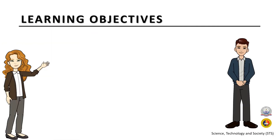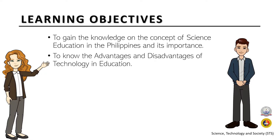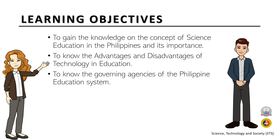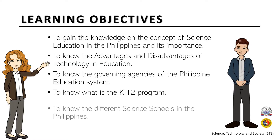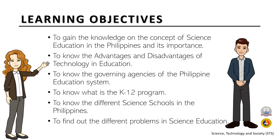Our learning objectives are as follows. First, to gain knowledge on the concept of science education in the Philippines and its importance. To know the advantages and disadvantages of technology in education. Next, to know the governing agencies of the Philippine education system. To know what the K-12 program is. To know the different science schools in the Philippines. And lastly, to find out the different problems in science education.